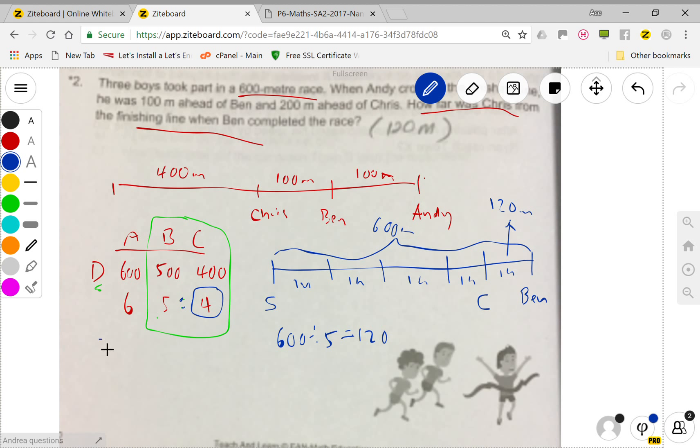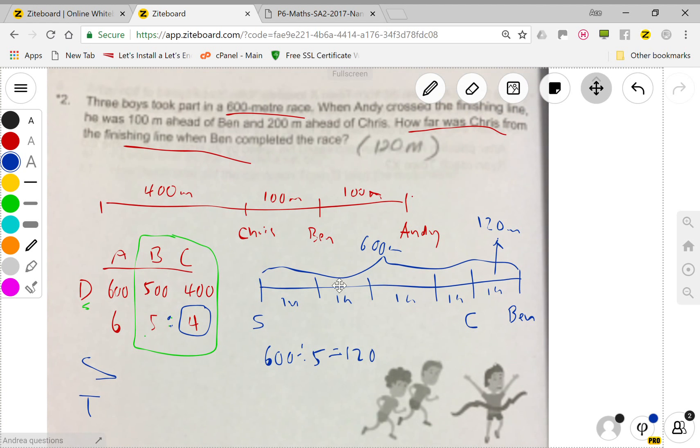It's a DST ratio, but don't need speed and don't need time. Just look at the ratio between the distance of these three persons. You just need to look at the ratio.